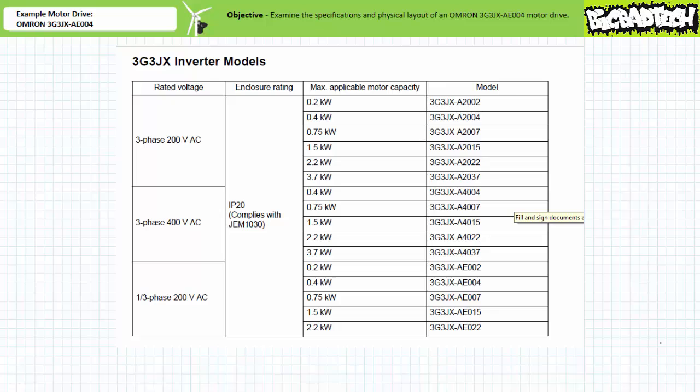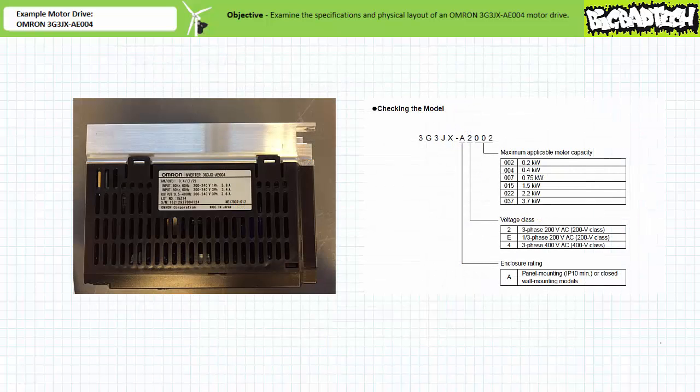The OMRON 3G3JX AE004 motor drive is part of the SysDrive JX series of compact simplified inverters manufactured by OMRON. The nameplate affixed to the side specifies this motor drive is an OMRON 3G3JX AE004. Interpreting this part number is astoundingly easy.